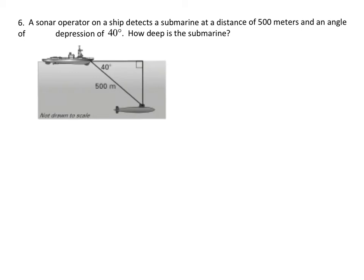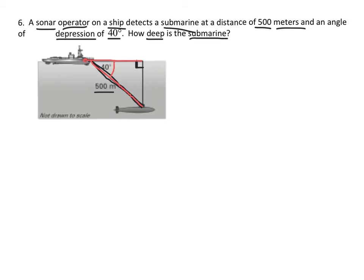The next example is actually a little bit easier. They're describing a sonar operator on a ship who detects a submarine at a distance of 500 meters and an angle of depression of 40 degrees. This one's a little bit easier because they already have the picture drawn. So it's a right triangle — the distance from the boat to the submarine is 500 meters, and they give me that angle of depression. Imagine the boat is heading straight ahead, but the sonar can detect the submarine down below the water's surface at a 40 degree angle. In this case, what I'm trying to solve for is the depth of that submarine.